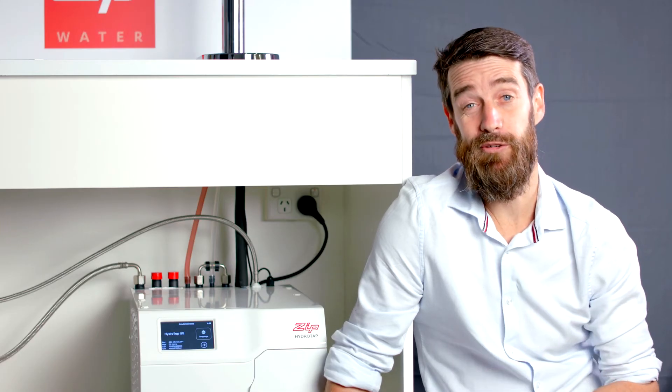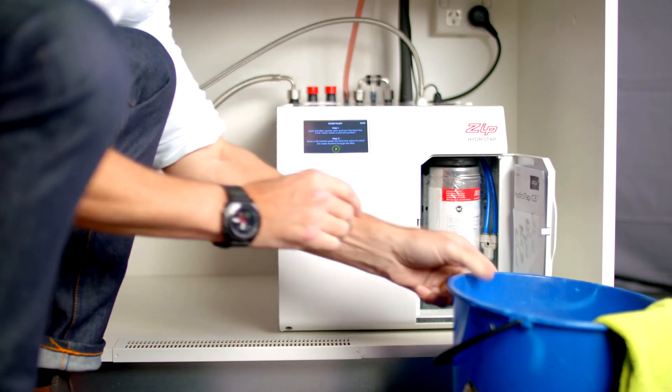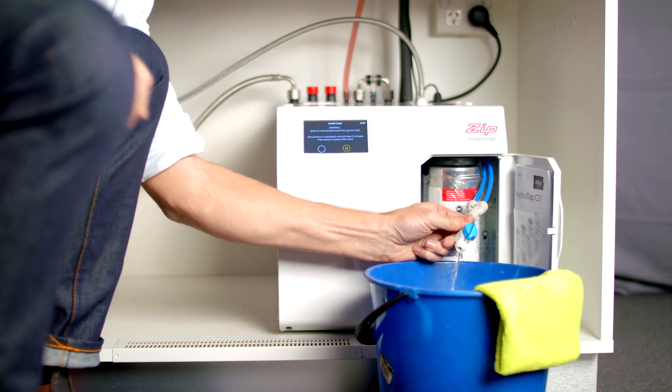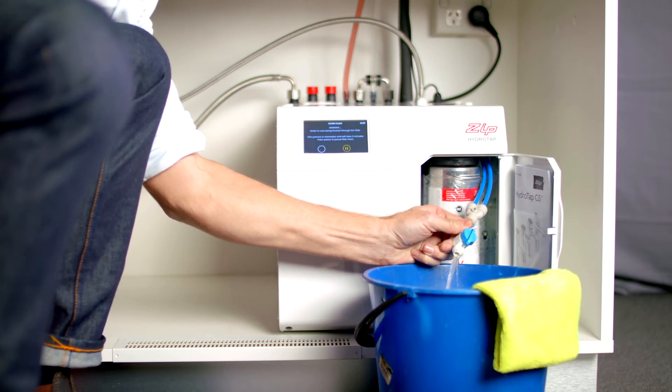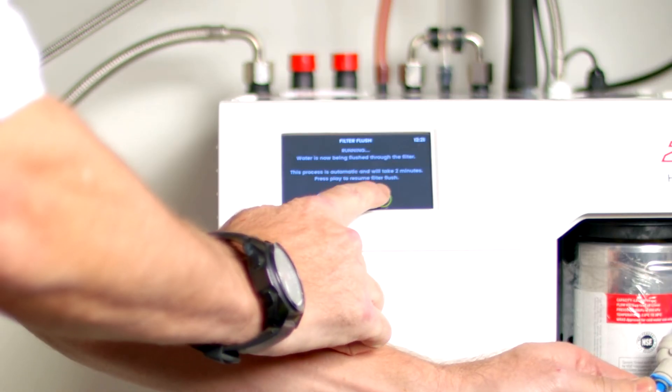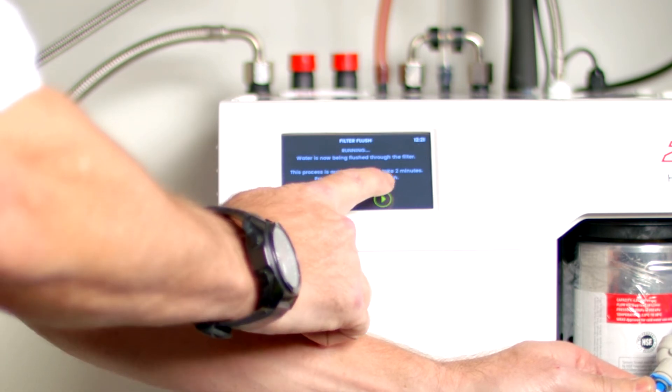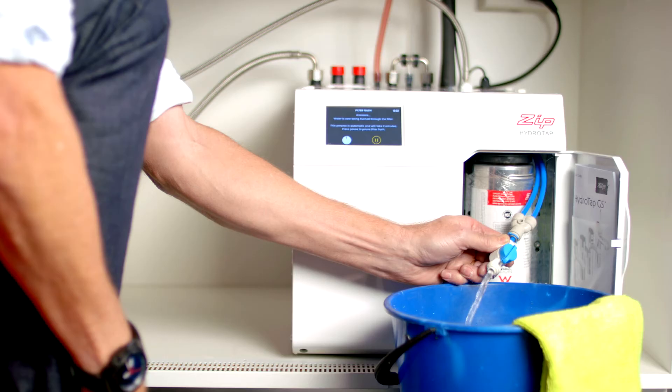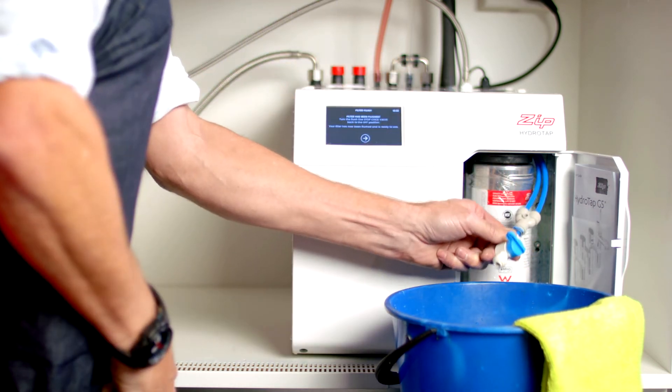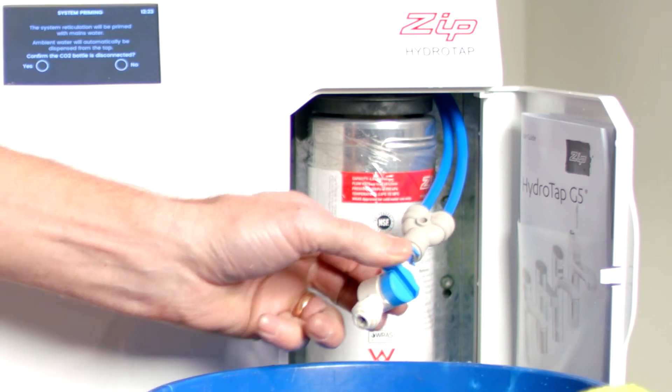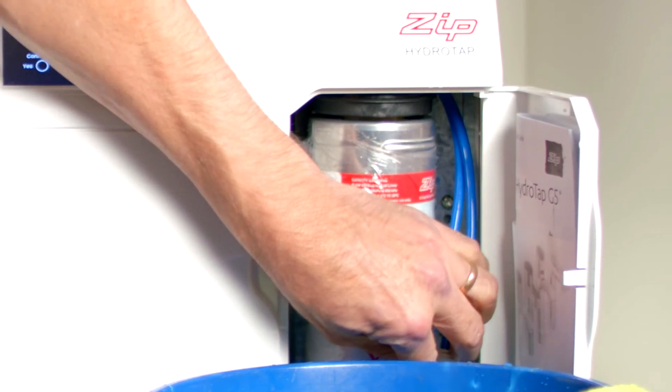Next, the internal filter needs to be flushed. Using a bucket, place the filter flush hose in the bucket and open the stopcock. Press the play button and the filter flush process will start. This process is timed to take two minutes. If you need to pause the filter flush, press the pause button on the LCD. When you're ready to resume the filter flush, press the play button. Once the filter flush is stopped, turn the stopcock off and give it a shake. Press the arrow button to go to the next screen. Put the flush hose back in the filter compartment and close the filter door.